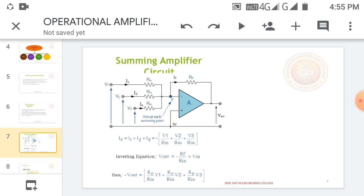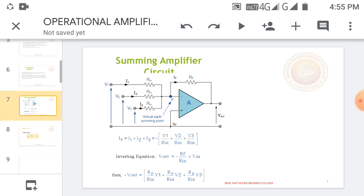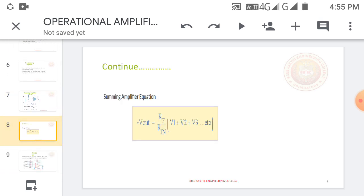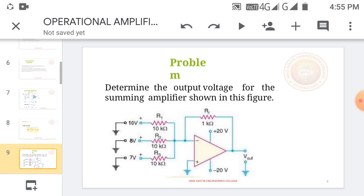The output is minus RF by R1 times V1 plus RF by R2 times V2 plus RF by R3 times V3. We get the output for the three inputs as negative because we are giving the input to the inverting terminal, creating an inverting amplifier. The output equation of the summing amplifier is given in the PowerPoint.